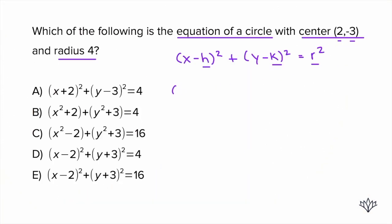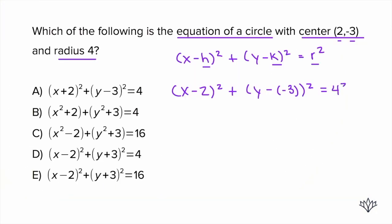Our h is 2, so x minus h becomes (x - 2)². Our k is negative 3, so we have (y - (-3))² equals our radius squared. And our radius was 4, so we have 4 squared. Now let's simplify: (x - 2)² + (y + 3)² = 16.